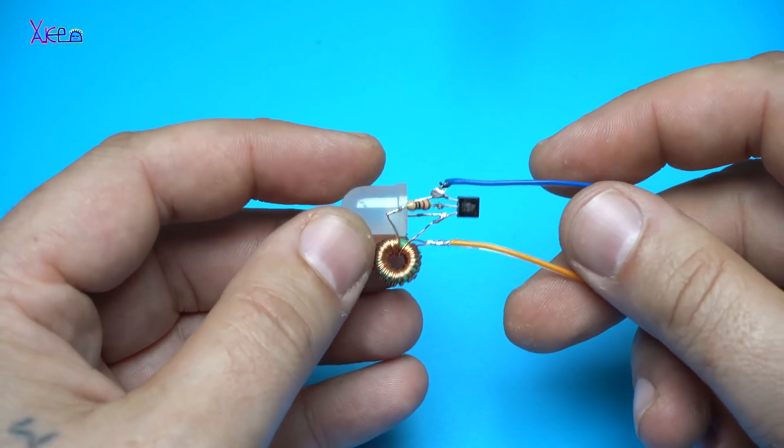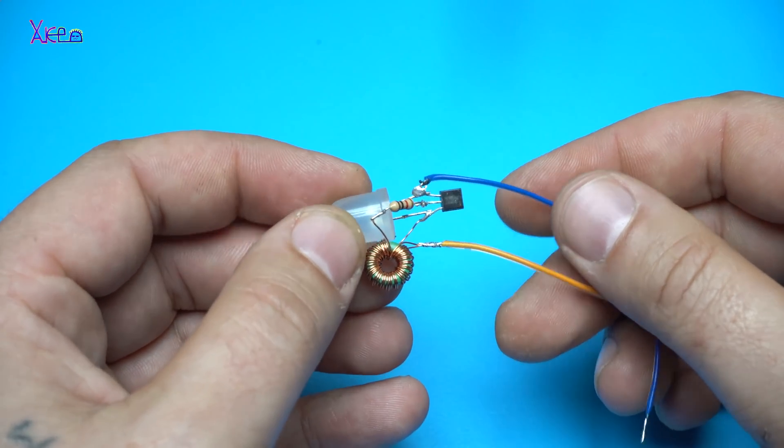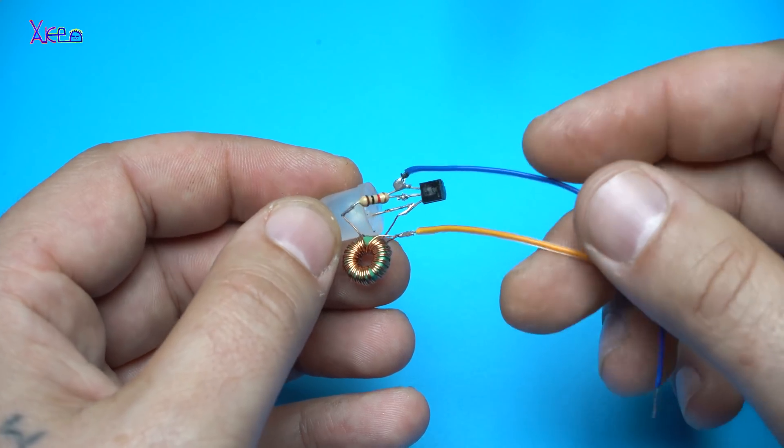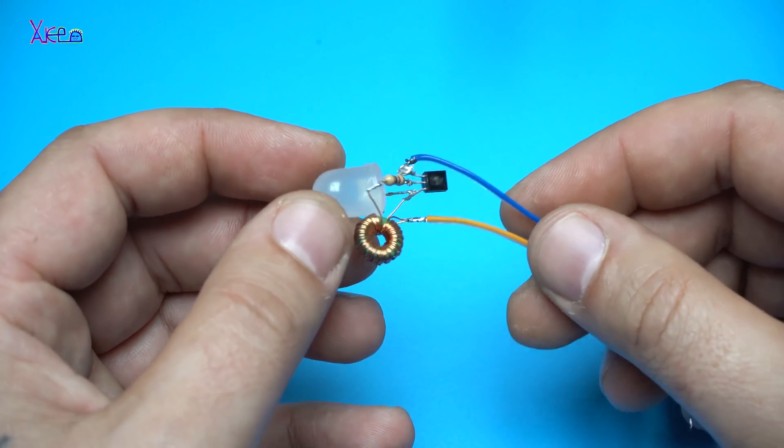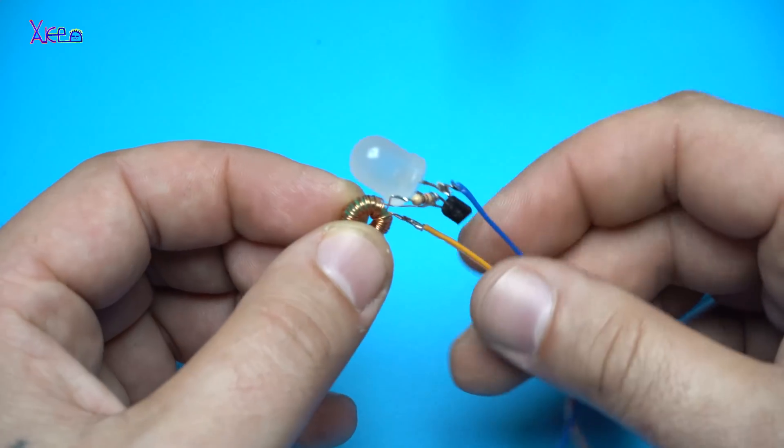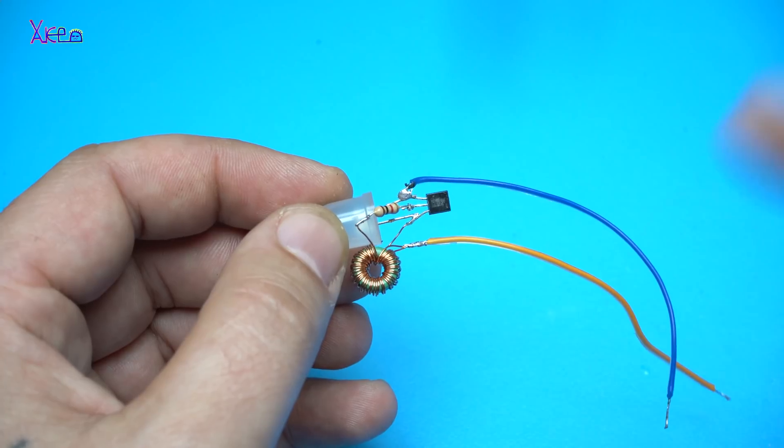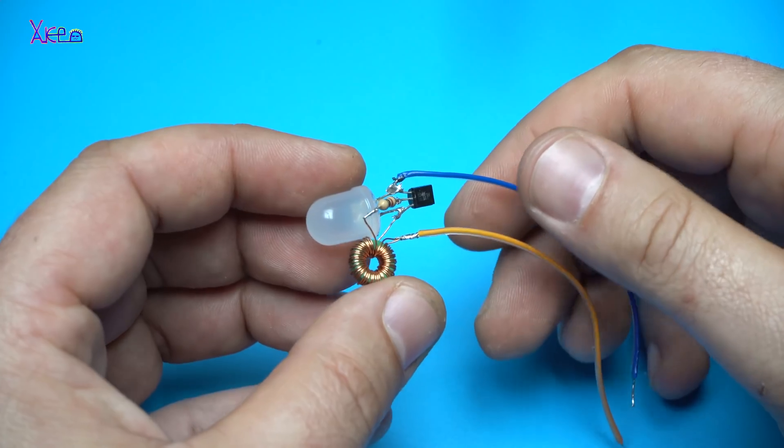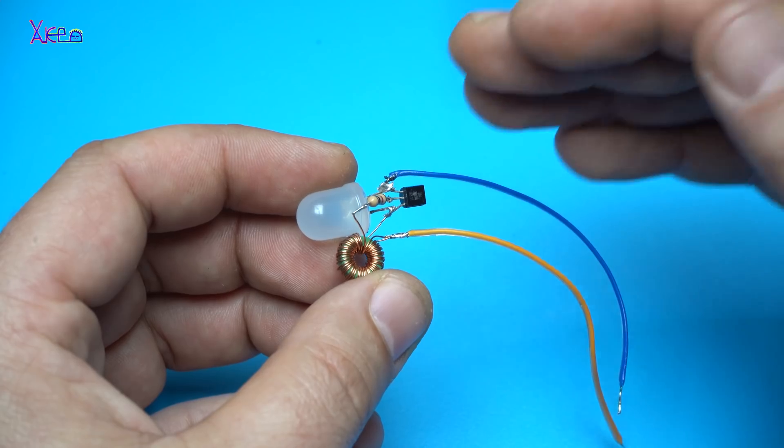It looks complicated. But it's simple circuit of Joule Thief. That boosts the voltage from zombie batteries or empty batteries, enough voltage to light up the LED. That's why it's called Vampire torch. This circuit works from 0.7 volts up to 1.5 volts.